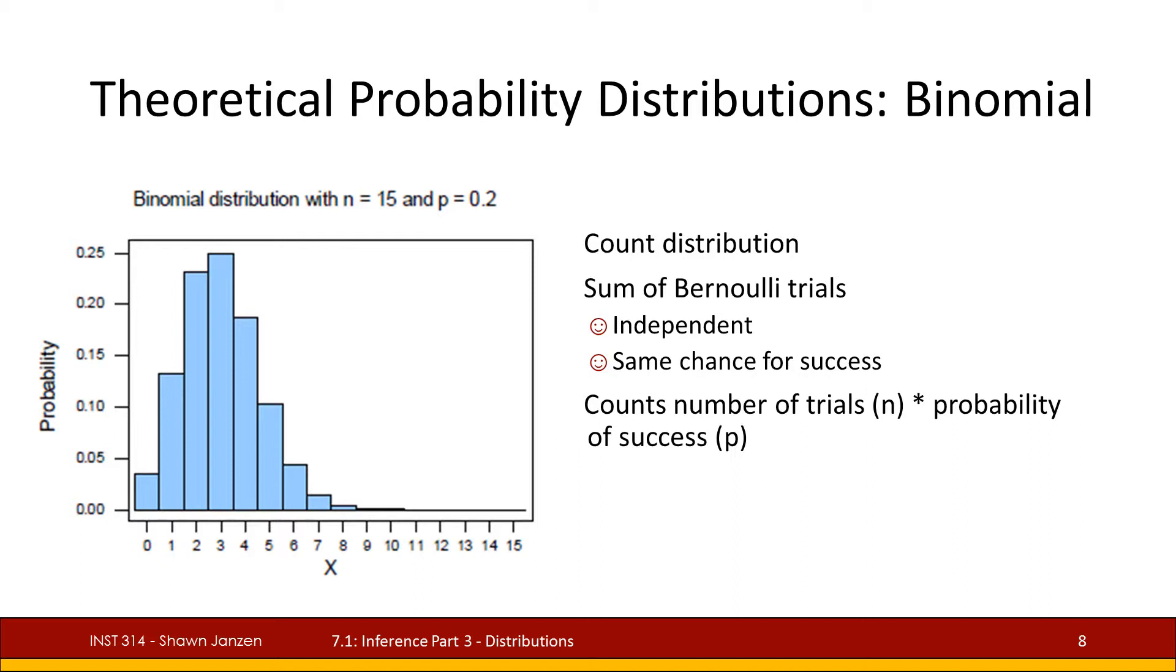Which carries us to the binomial probability distribution, this is the first of what we call a count distribution and it is the sum of different Bernoulli trials. So you can think that if you flip a coin once you mark down a heads you flip a coin again you might get a head you might get a tail and we'll maybe mark out another head.